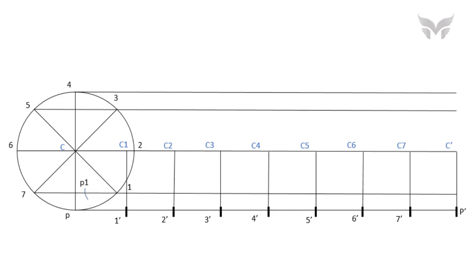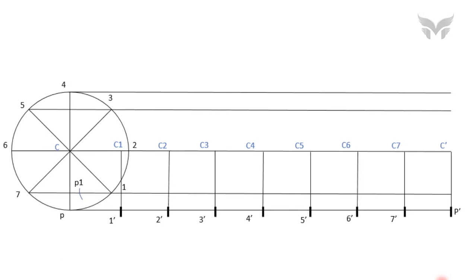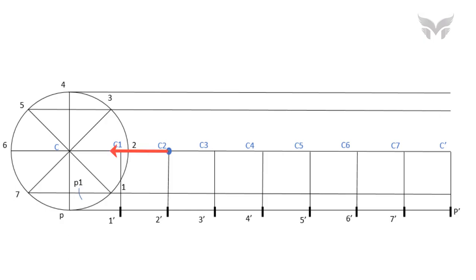Now, with same distance in a compass which is the radius of a circle. In fact, while locating all points, the distance in a compass will be same all the time which is radius of a circle. Only the centers to cut an arcs will get changed. Like, initially center was C1 and now it will be C2 and we will cut an arc on a line which is passing through 2 and let's name that point as P2.